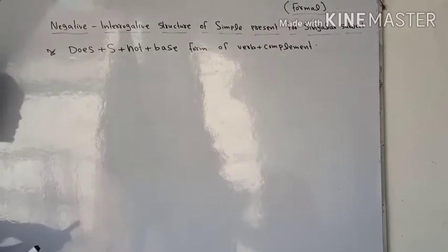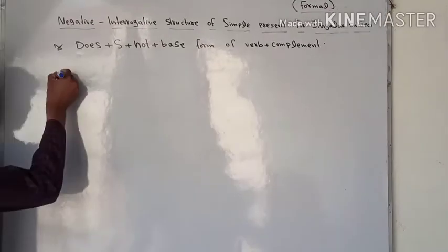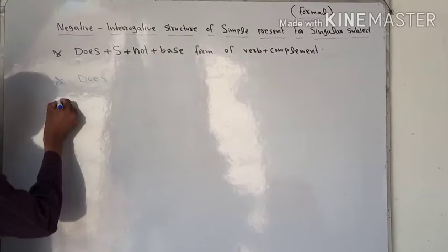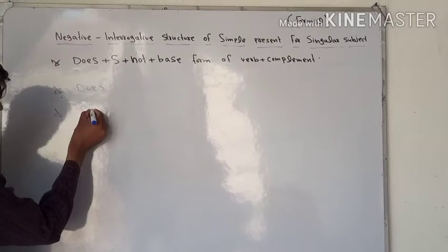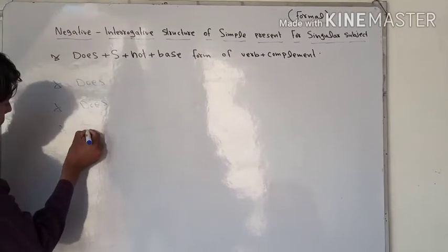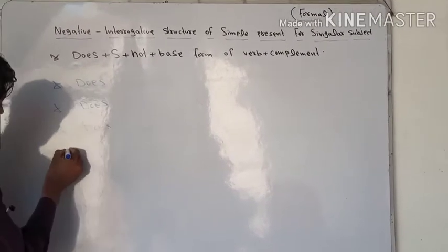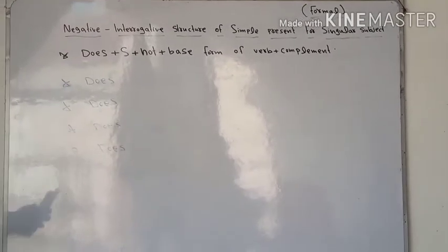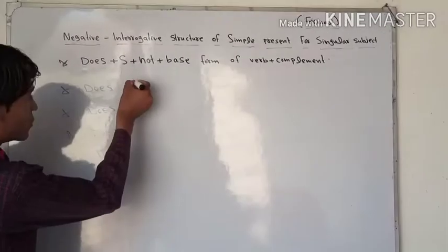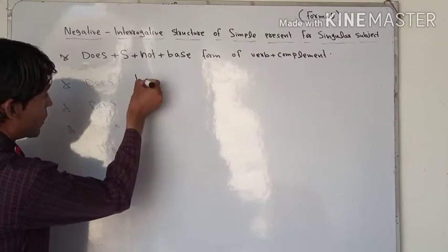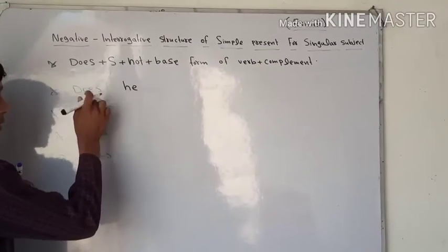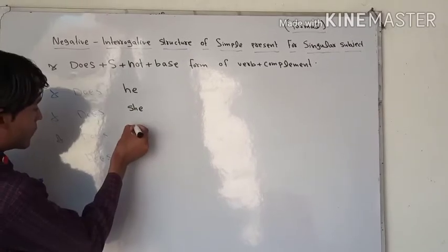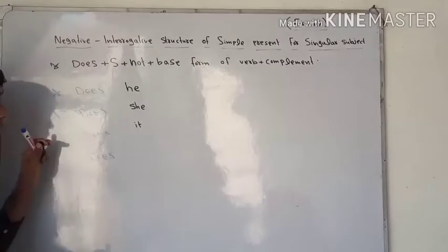The singular subjects are: he, she, it, and also a singular noun. So first of all we add 'does' before each of these subjects. Before 'he' we add 'does,' before 'she' we add 'does,' and before 'it' we also add 'does.'